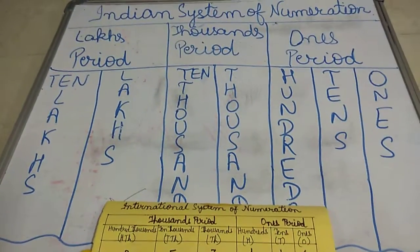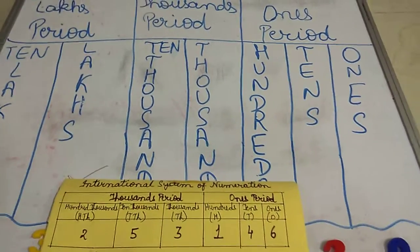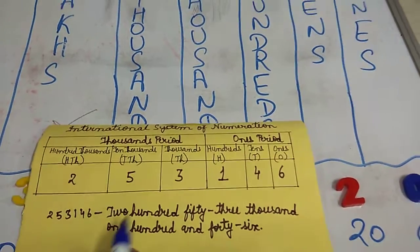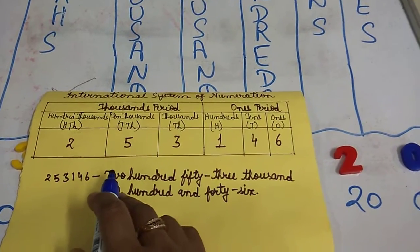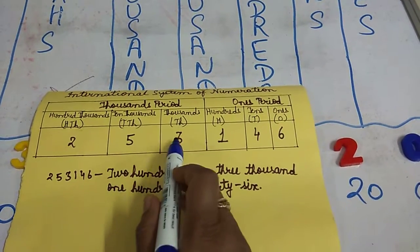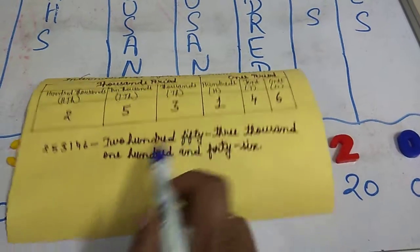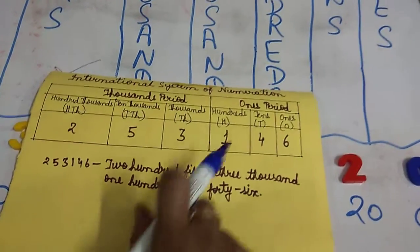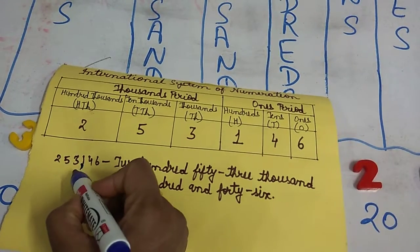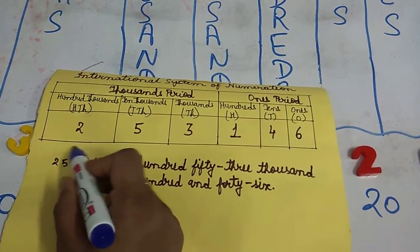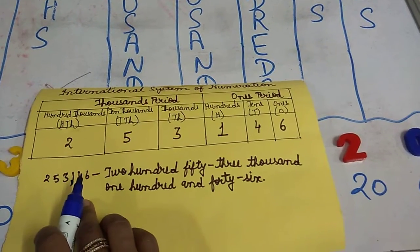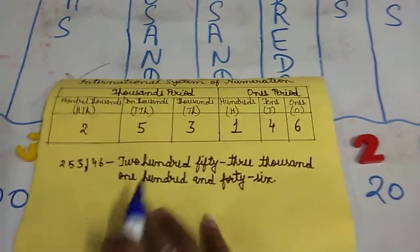So if I want to write this number in the international system, the number name will be two hundred fifty-three thousand one hundred and forty-six. To place the comma, I will put it after three digits from the right. These three digits are in the same period, so the number is written as 253,146 and the number name is two hundred fifty-three thousand one hundred and forty-six.